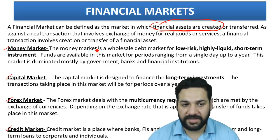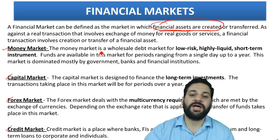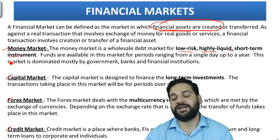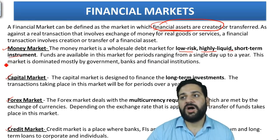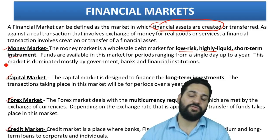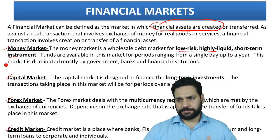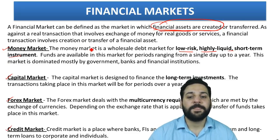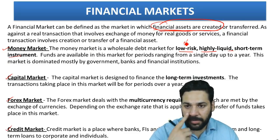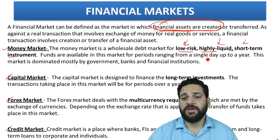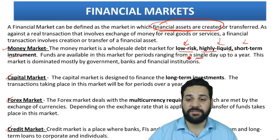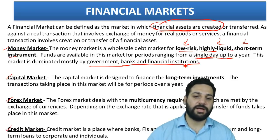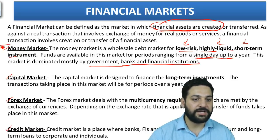The money market is a wholesale debt market in which low-risk, highly liquid, and short-term instruments are exchanged. It is dominated by government, banks, and financial institutions — normal individuals and companies cannot take part in money market operations. The time period ranges from a single day up to one year.